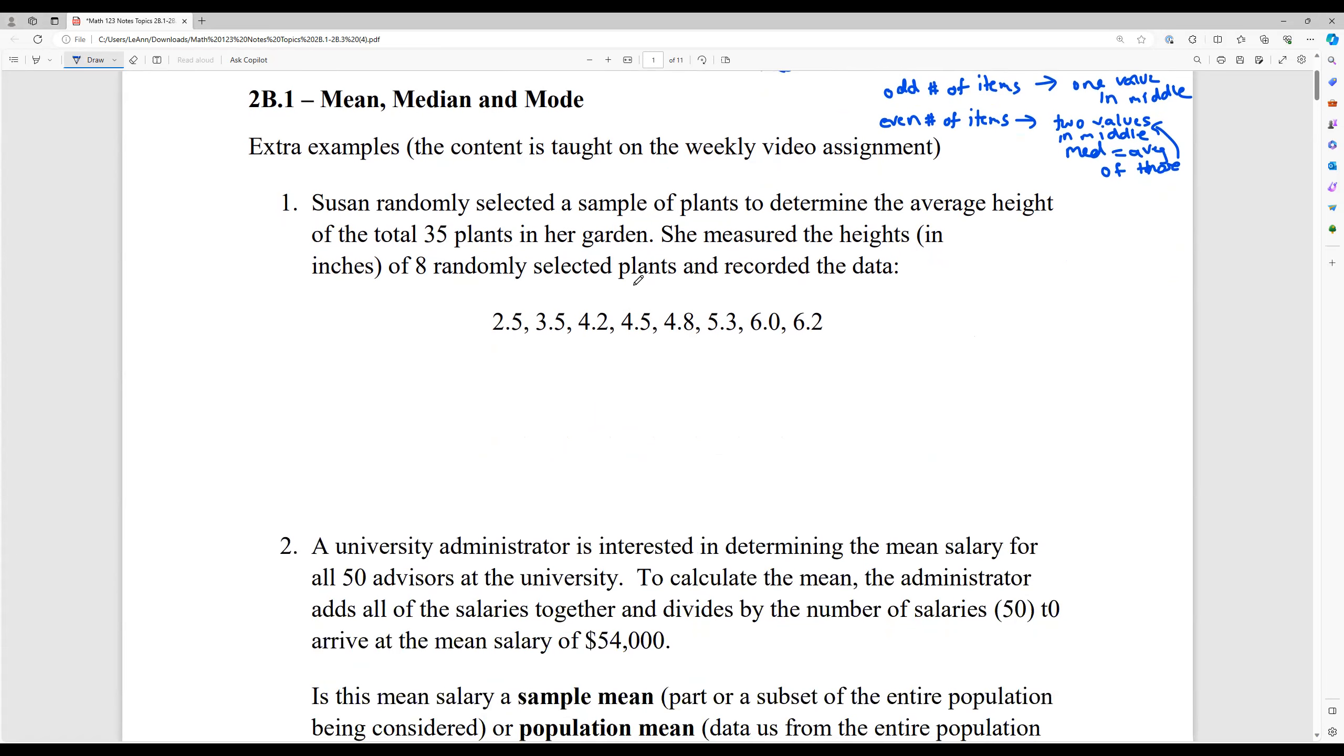So let's look at this example. It says Susan randomly selected a sample of plants to determine the average height of the total 35 plants in her garden. So she's only taking a small sample. She's only going to measure the heights of eight of her randomly selected plants and record that data. Now I've already organized this in order from least to greatest. So it'll be easier to find the median, but if it wasn't, you could do that yourself. And I always recommend doing that first. So to find the mean, and by the way, this is a sample mean since she's not using all 35 plants. She's only using eight of her plants in her garden. We write X bar as the notation for a sample mean.